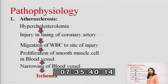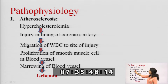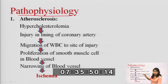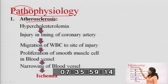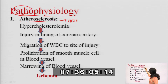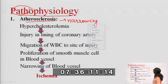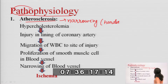Now, the pathophysiology — why ischemic heart disease occurs. Pathophysiology means understanding how the disease affects the functions of the body. Number one reason is atherosclerosis. Atherosclerosis is narrowing and stiffening — basically hardening of the arteries.